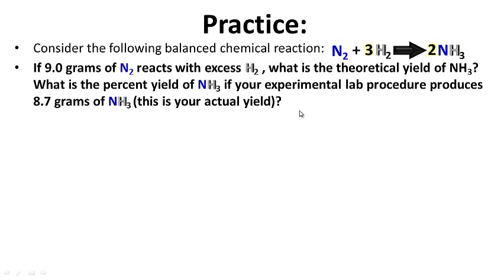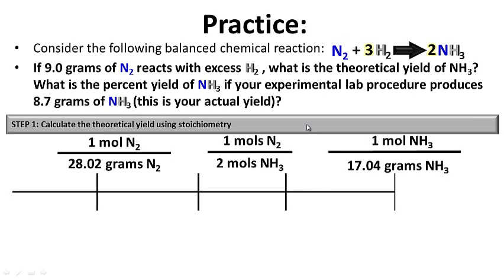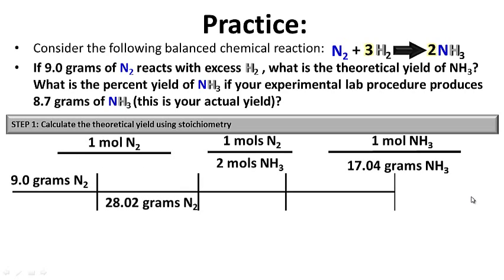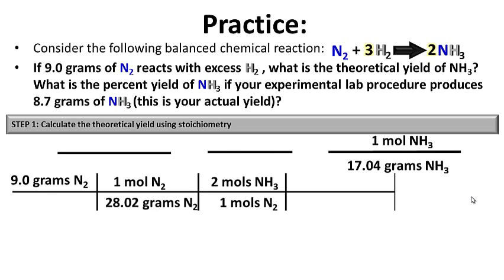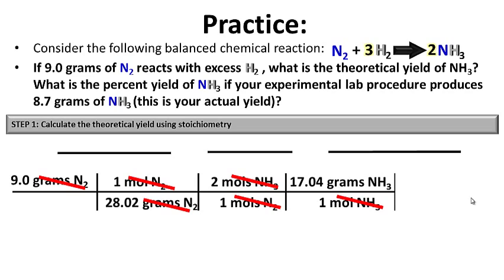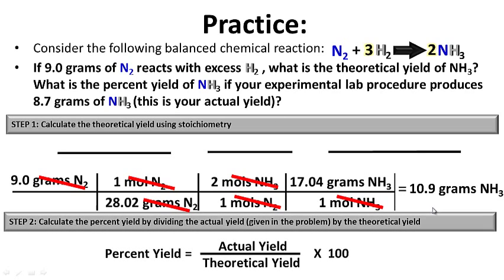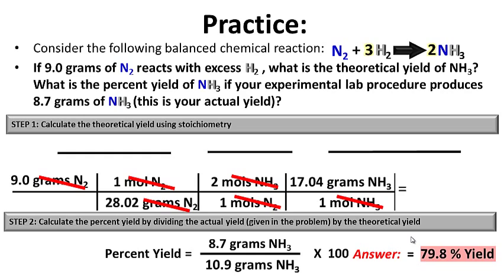Practice problem solution: since H2 is in excess, start with 9 grams of N2 to determine the theoretical yield. So: 9 grams of N2 × (1 mol N2 / 28.02 g N2) × (2 mol NH3 / 1 mol N2) × (17.04 g NH3 / 1 mol NH3). Units cancel — theoretical yield is 10.9 grams of NH3. Step two: actual yield of 8.7 grams divided by 10.9 grams, times 100, gives a 79.8% yield.